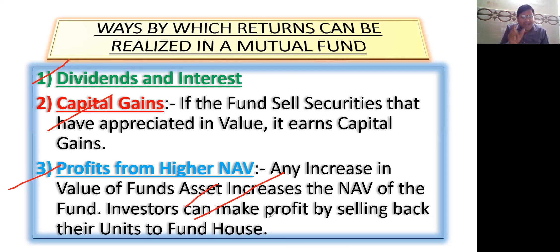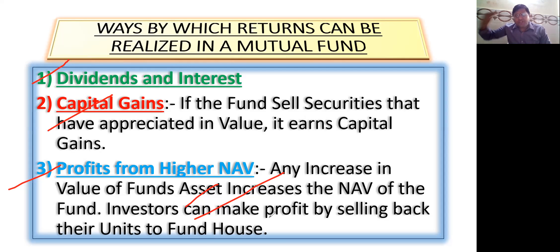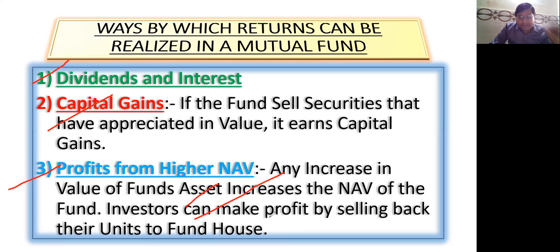Remember: capital gains and profit from higher NAV have a similarity — when NAV is higher and the mutual fund sells, capital gains result. Ways returns are realized: dividend/interest, capital gains, and profit from higher NAV. When the price of one unit increases, NAV is higher, and profit is earned. These are the basic points to remember.